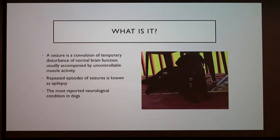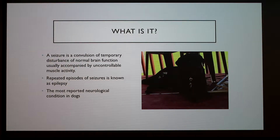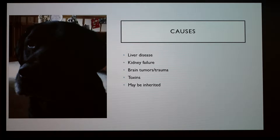A seizure is a convulsion or temporary disturbance of normal brain function, usually accompanied by uncontrollable muscle activity. Repeated episodes of seizures is known as epilepsy, and it's the most reported neurological condition in dogs. It can be caused by liver disease, kidney failure, brain tumors and trauma, toxins, and it may be inherited.